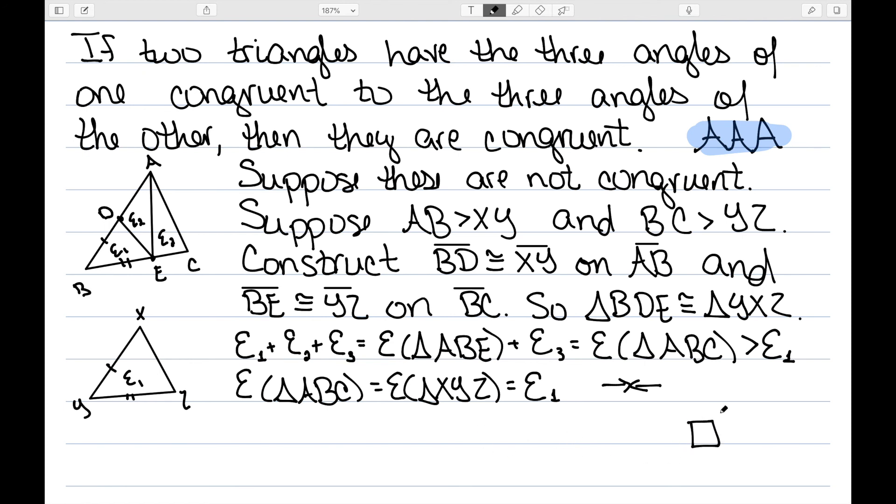These triangles had to be congruent to start with. And this essentially tells me that in spherical geometry, similar triangles do not exist. If all three angles are the same, my triangles are congruent.